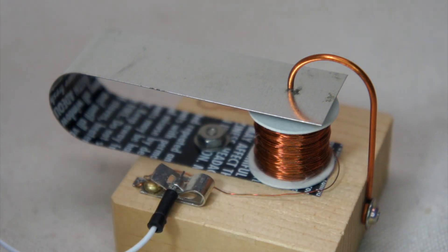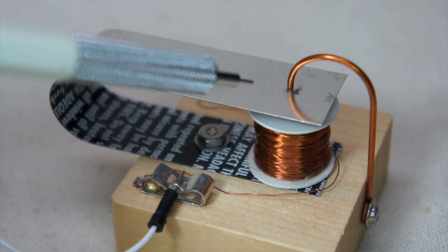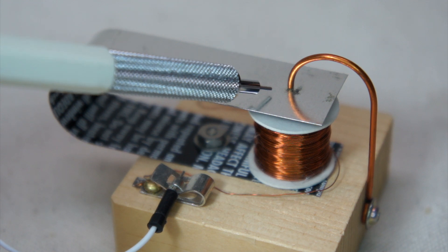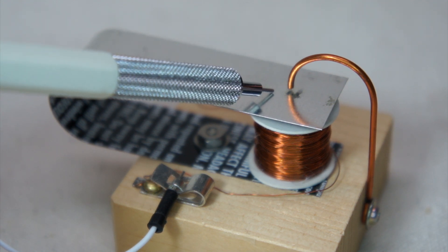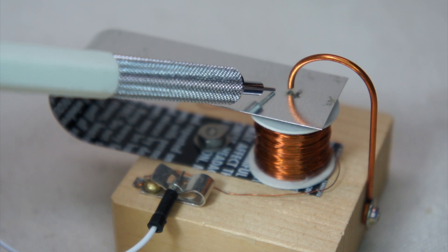So, when the magnet is energized, the armature is pushed down, or pulled down, and contacts the core of the electromagnet, making a sound, a click.